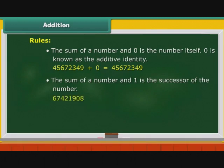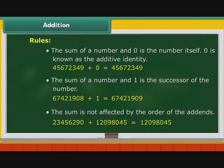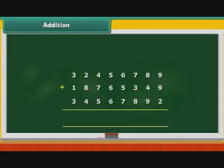The sum of a number and 1 is the successor of the number. For example, 67421908 plus 1 is equal to 67421909. The sum is not affected by the order of the addends. Let us now learn to add large numbers.